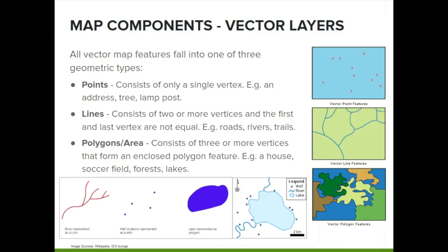Lines represent features such as roads, rivers, and electrical lines. Polygons, also called areas, represent land uses, building footprints, and other enclosed areas such as lakes and soccer fields. We will mainly be using vector layers in these modules.